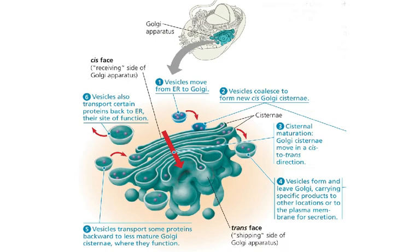This is the Golgi apparatus — the post office of the cell. When biomolecules come to the Golgi, they can be tagged with a chemical tag that tells them where in the cell they need to go. For example, a hormone can be tagged to get to the plasma membrane and be secreted. The Golgi looks like a stack of pancakes, with one end called the cis face and the other the trans face. Vesicles enter at the cis face and exit at the trans face.